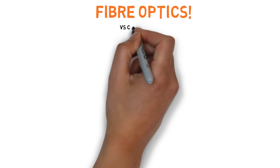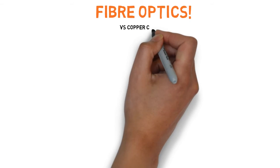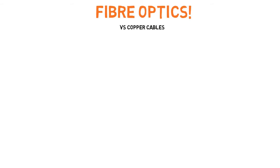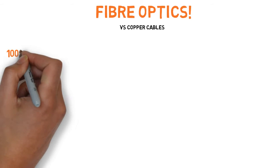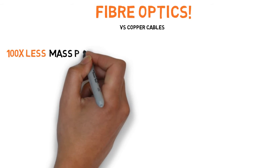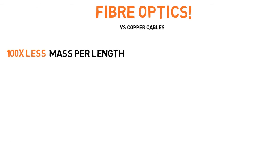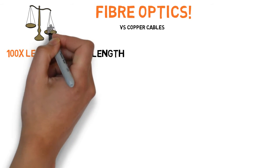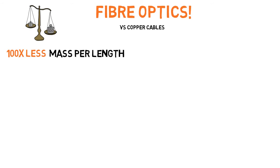What makes fiber optic cables that much better than traditional copper cables? For starters, fiber optic cables are much lighter — 100 times lighter, to be precise.